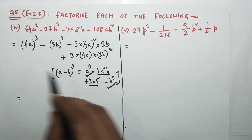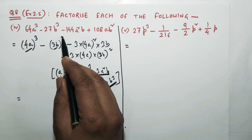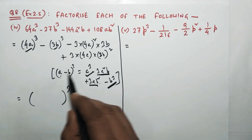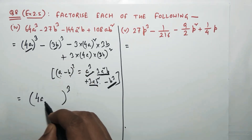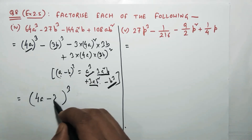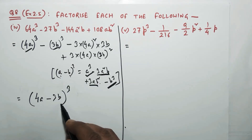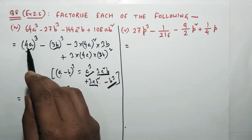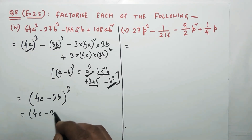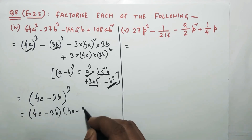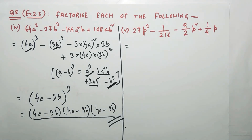Now, which one is a? From the a³ term, a is 4a. Which one is b? From the b³ term, b is 3b. So it falls in the identity (a - b)³, giving (4a - 3b)³. This means (4a - 3b) multiplied three times — (4a - 3b)(4a - 3b)(4a - 3b) — and this is your required factorization.